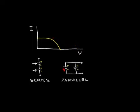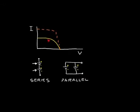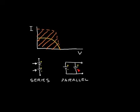Now let's connect two identical solar cells in parallel. In this case we maintain the same voltage but double the current capability. We end up with a new curve that has higher current but the same voltage. The area under this curve has approximately doubled, so by adding two identical solar cells in parallel we extract twice as much power — the same result as series.